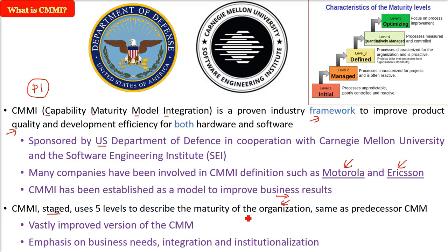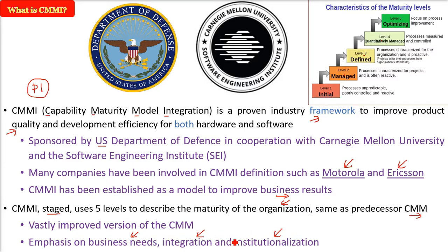CMMI uses five levels to describe the maturity level an organization has attained in terms of quality, similar to its predecessor CMM (Capability Maturity Model). This CMMI is a vastly improved version of the earlier model, with basic emphasis on business needs, integration, and institutionalization.